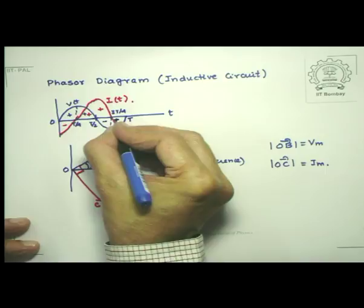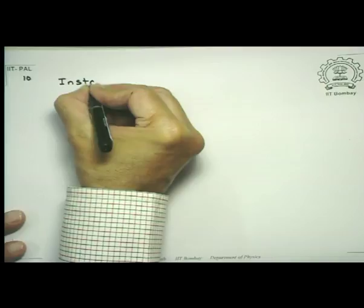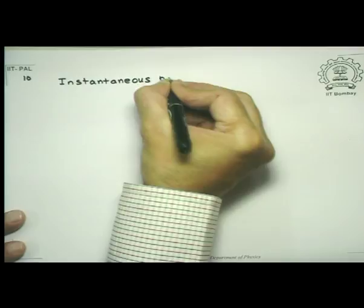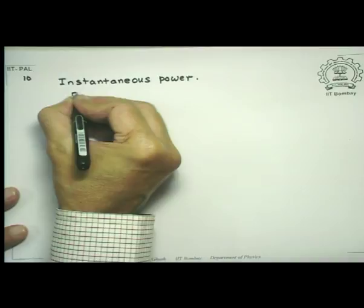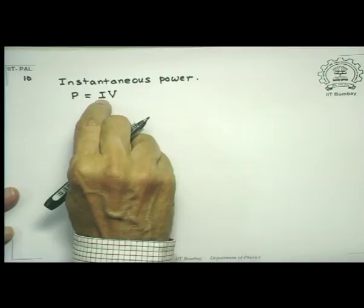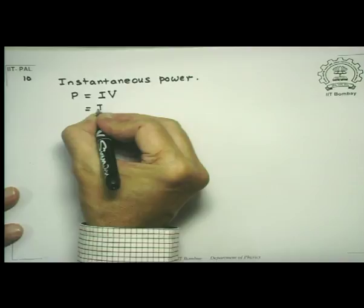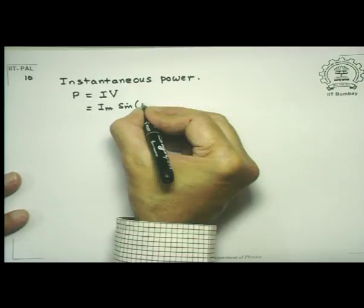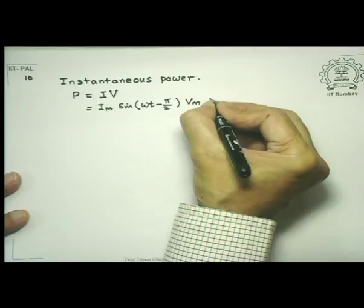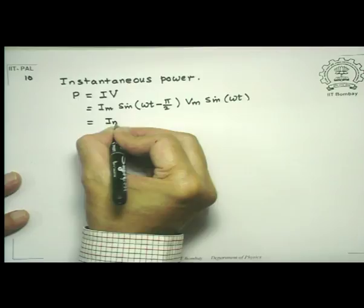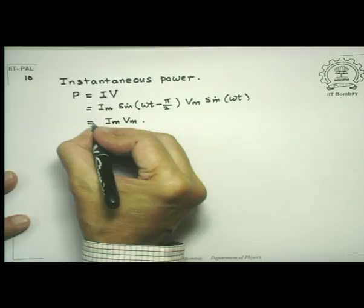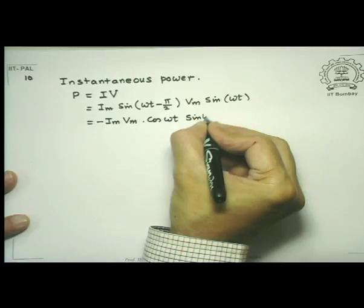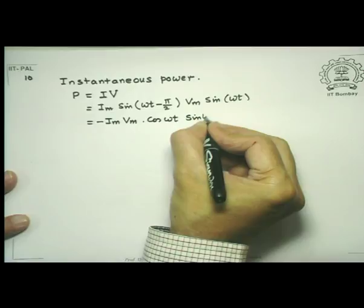What about the power in an inductive circuit? Let us look at instantaneous power: power is given by I times V. So instantaneous power = Im sin(ωt − π/2) times Vm sin(ωt). This is equal to Im·Vm times [−cos(ωt)·sin(ωt)], which is nothing but −Im·Vm/2 times sin(2ωt). This tells me that the power over a cycle is 0.